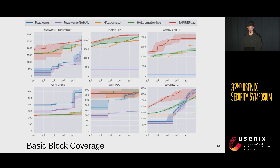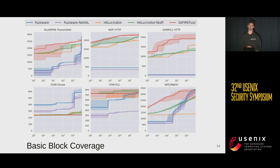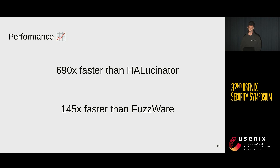Here you have the coverage over time. Note that the x-axis is a log scale, from 0 seconds and 10 seconds up to 24 hours. You can see we are vastly faster at recovering coverage. This is 6 of 12 targets. Overall, compared to Hallucinator, we are recovering 30% more coverage, and for virtually all targets we are doing so way faster. For performance overall, we are on average 690x faster than Hallucinator, up to 1,100 times, and for Fuzzware it's still 145 times faster.